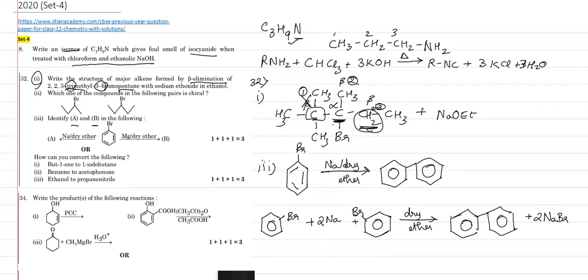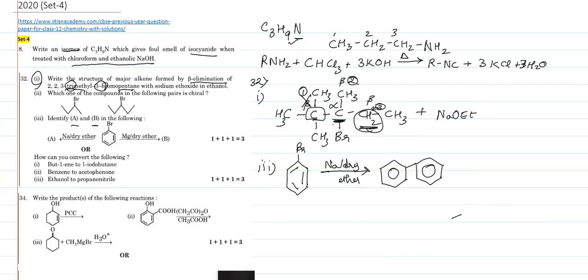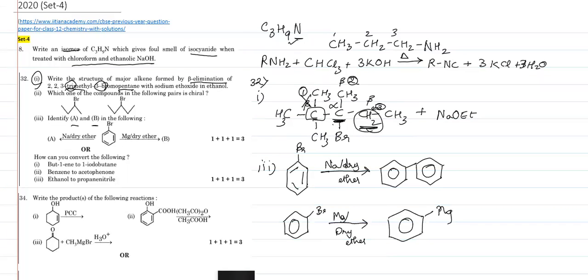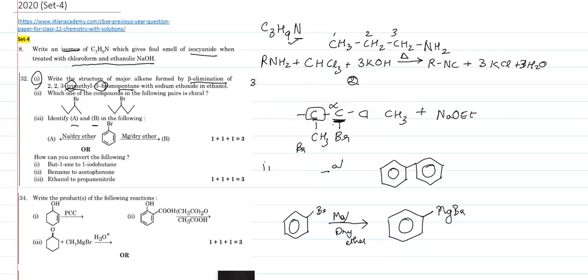The next reaction: bromobenzene reacts with magnesium and dry ether. You might assume it gives the same product as sodium, but that's wrong. When bromobenzene reacts with magnesium and dry ether, this is the reaction with metals, and it gives us phenyl magnesium bromide (PhMgBr) — this is the Grignard's reagent. So bromobenzene with Mg and dry ether gives us the Grignard's reagent.